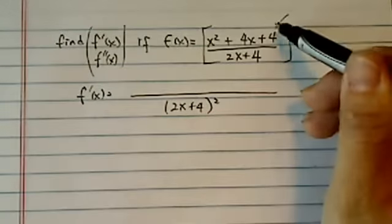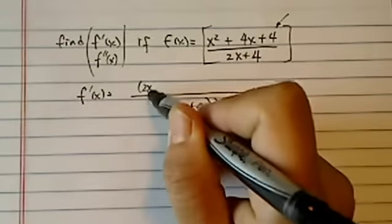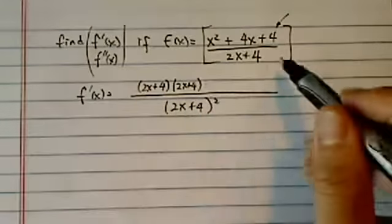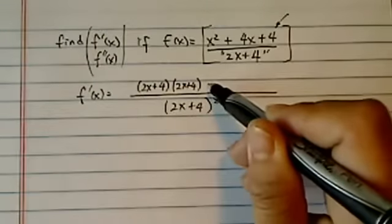And then I'm going to take derivative of the first one, which is 2x plus 4, leave the second one alone, which is 2x plus 4, second one meaning the denominator. Minus.